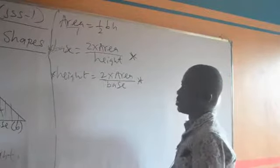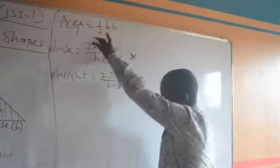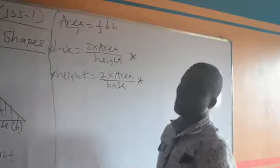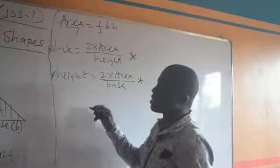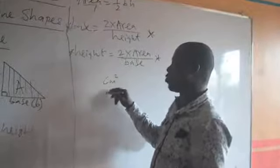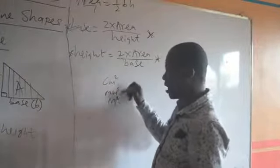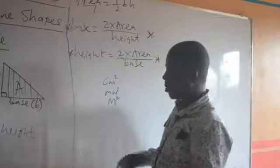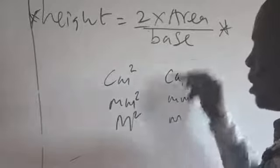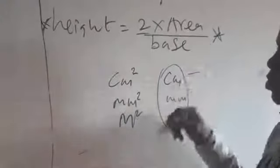Please, these three formulas — you have to memorize them. You get the base, you get the height, and you get the area. The area of the triangle is expressed in square units. At times it will be centimeter squared, millimeter squared, or meter squared. If you see them existing in this form with squares, it means it is area. Centimeter, millimeter, meter — these are the units for the height or the base.